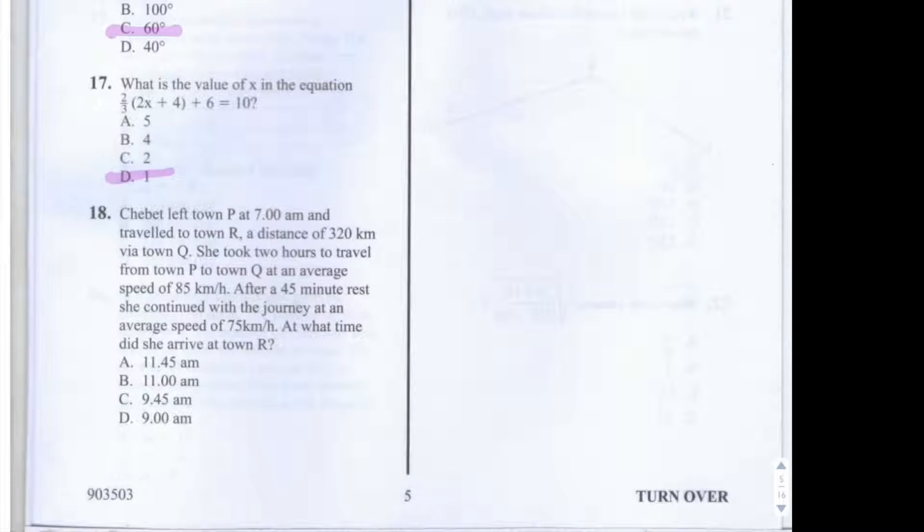After a 45 minute rest, she continued with the journey at an average speed of 75km per hour. At what time did she arrive at town R? Whenever you see these kind of questions, it's always quite helpful to represent them as a timeline.